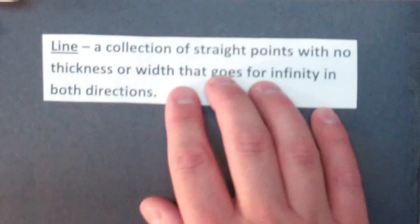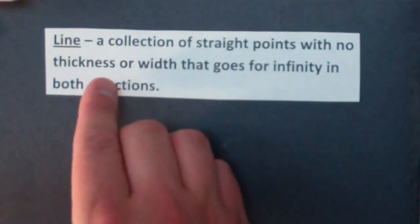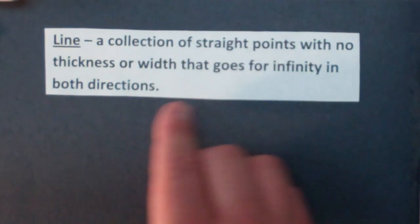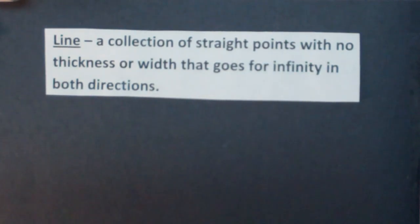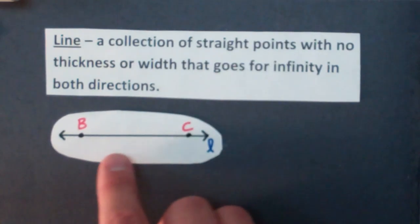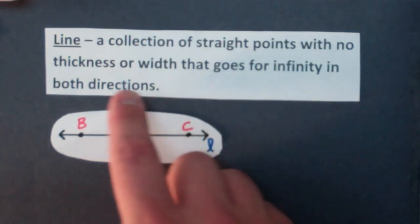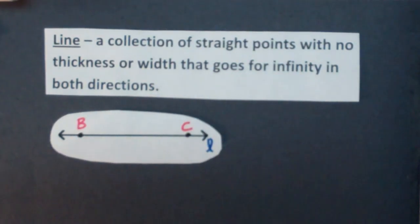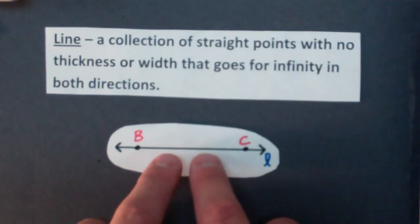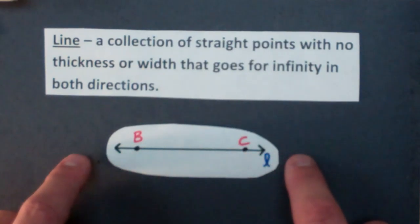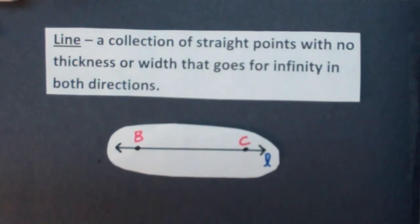So moving on to line. Line is a collection of straight points with no thickness or width that goes for infinity in both directions. So I have a bunch of points here that help create this line with no thickness or width that goes for infinity in both directions. So these arrows here indicate that the line goes for infinity in both directions. And again, there's no thickness or width, so I couldn't physically grab onto that line.